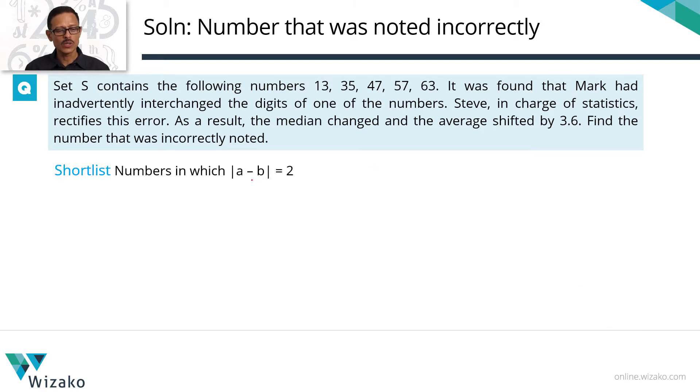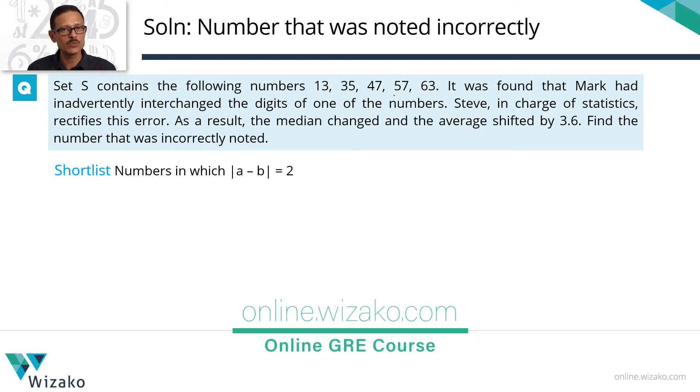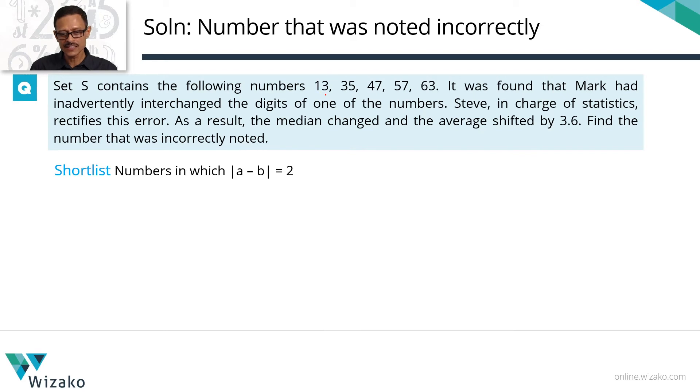Let's move on from here. Now what are all the numbers in this set of 5 numbers which have the difference between the units and tens place being 2? 13, 3 minus 1 difference is 2. So this is a possibility. 35, that's also a possibility. 47, the difference is 3. We need the difference to be 2. 57, that's one more possibility. 63, the difference is 3. So we have shortlisted from 5 to 3. So it could be 13, it could be 35 and it could be 57. All of this information has come from one part of the data that we have, that the average shifted by 3.6.